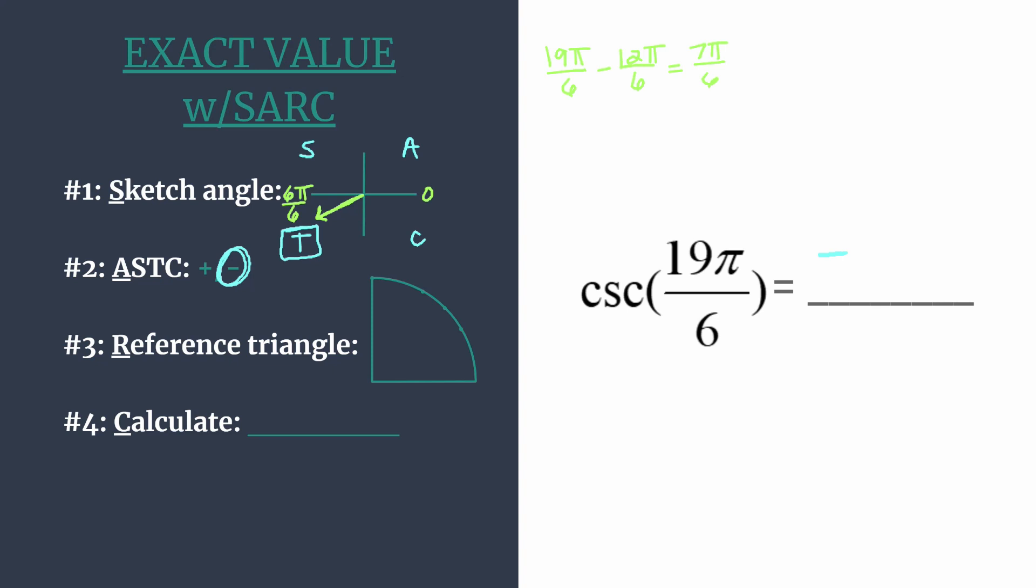So now we can find our reference triangle. And to do this, we first need to look at our reference angle, which is just the amount of rotation from our terminal side to the x-axis. And so we see that 6π over 6 is how we said a half rotation. And then just 1π over 6 more than that would get us to our terminal side, 7π over 6. So our reference angle is π over 6 or 30 degrees.